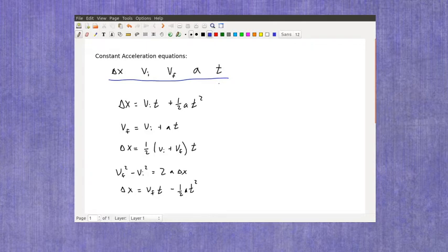Using those five variables, we can actually write five different equations for motion with constant acceleration. And these are the ones that I typically use in my class. Now, what I want you to notice is that each one of these equations has four variables in them.